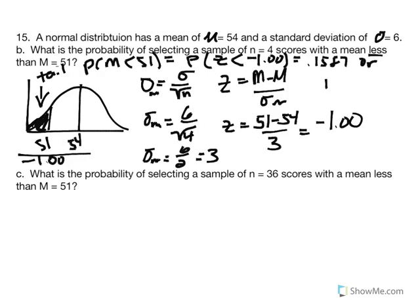The proportion in that area equals 0.1587, or there's a 15.87% chance that if we randomly selected a sample of n equal to 4 from this distribution, that sample mean would be less than 51. In 15C, the only difference is that n equals 36, reemphasizing the relationship between increasing sample size, standard error, and z-score: as n increases, standard error decreases and z-scores increase.